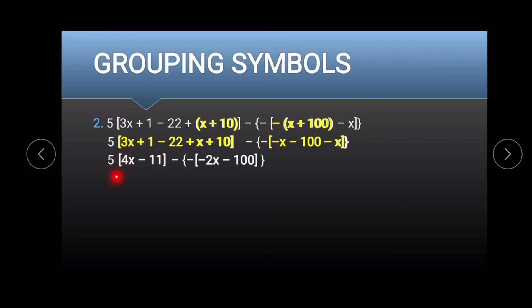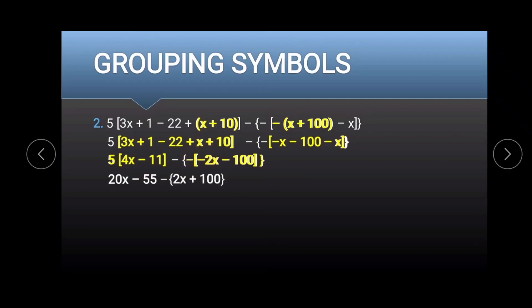We still have brackets. So 5 multiplied to 4x minus 11 — we distribute 5 to 4x minus 11. For negative 2x minus 100, we distribute the negative sign. 5 times 4x gives 20x, and 5 times negative 11 gives negative 55. Negative times negative 2x gives positive 2x, and negative times negative 100 gives positive 100.